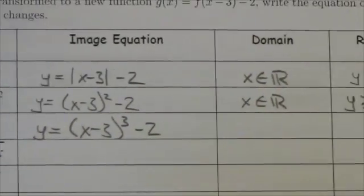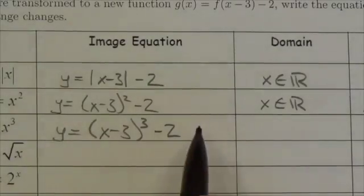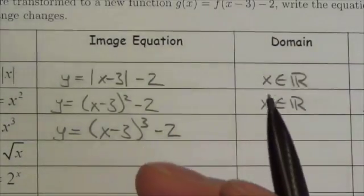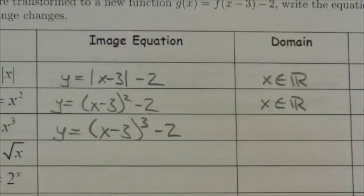Let's talk about what that would do to the domain and the range here. Now, think about a cubic. A cubic has all real numbers as its domain and all real numbers as its range.